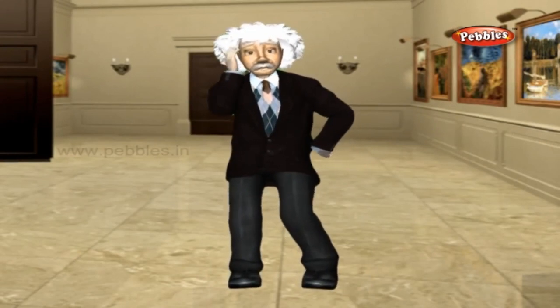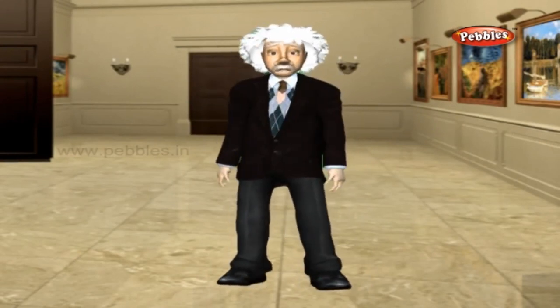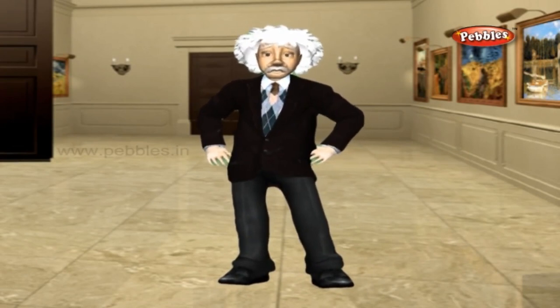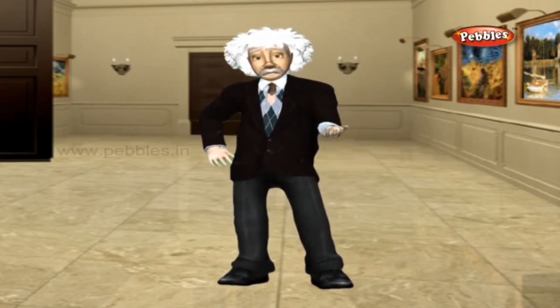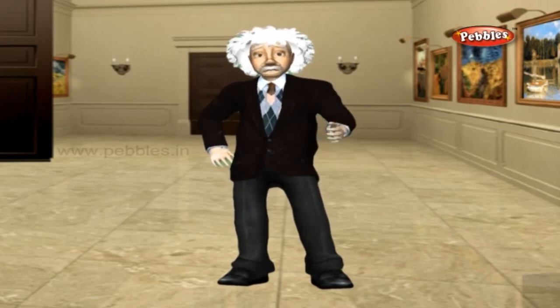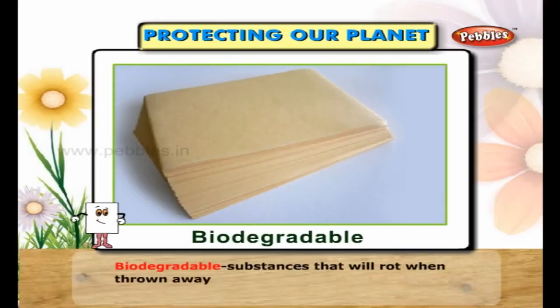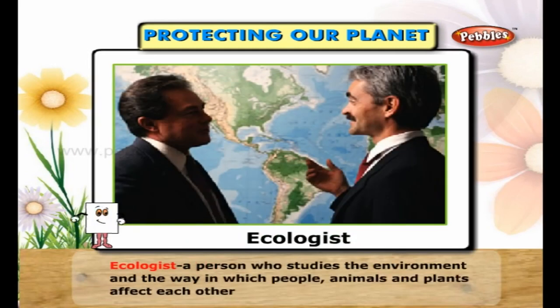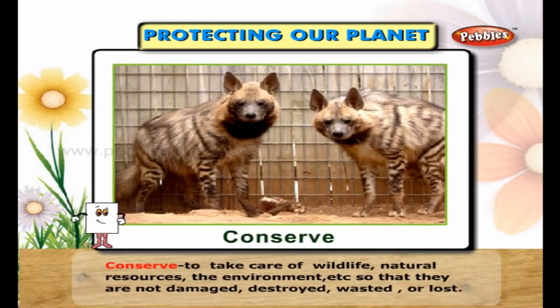What are you doing to protect our planet? Protecting our planet means safeguarding our planet from destruction due to global warming. Biodegradable refers to substances that will rot when thrown away. An ecologist is a person who studies the environment and the way in which people, animals and plants affect each other. To conserve means to take care of wildlife, natural resources, the environment, etc., so that they are not damaged, destroyed, wasted or lost.